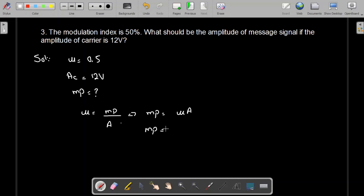So MP, the amplitude of the message signal, equals 0.5 multiplied by AC, which is 12 volt. Let me write AC here so you don't get confused. So 0.5 multiplied by 12 volt is 6 volt.